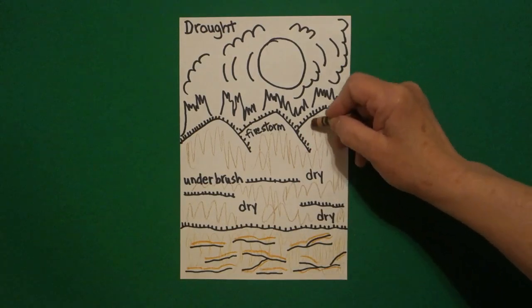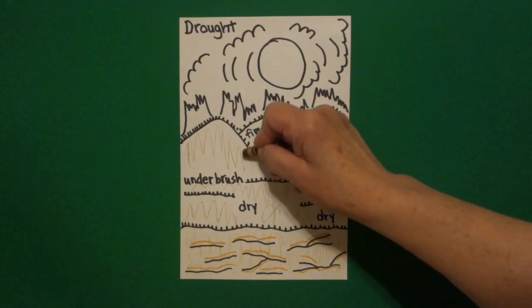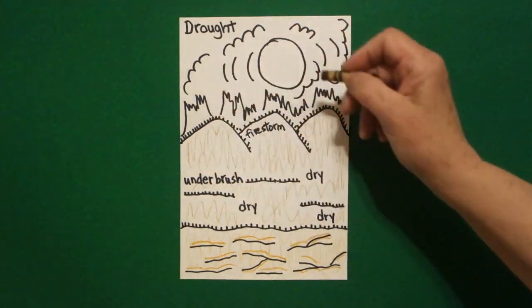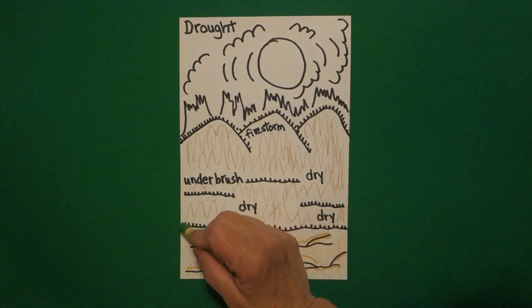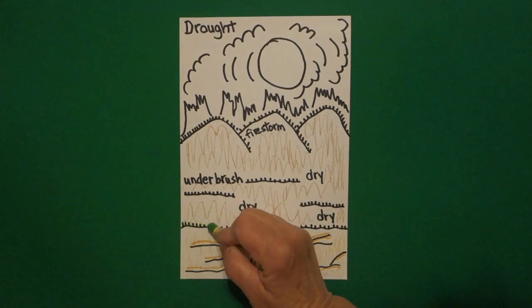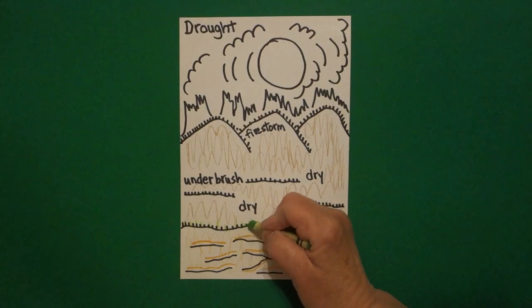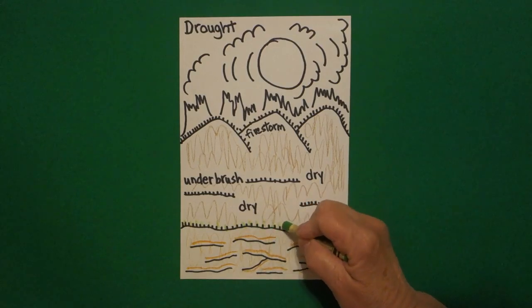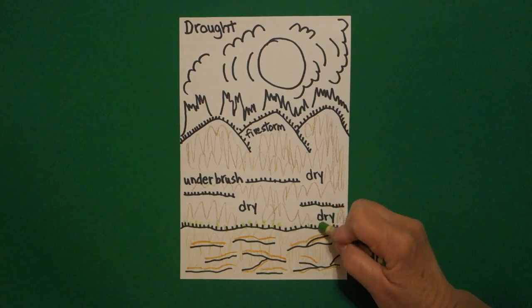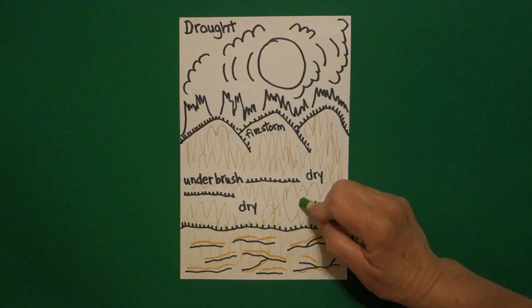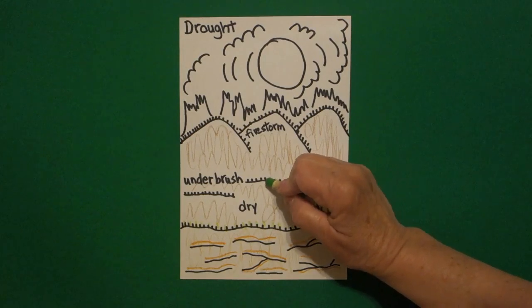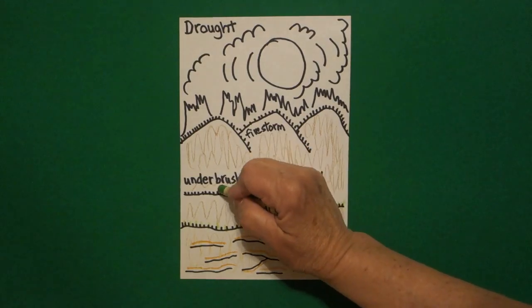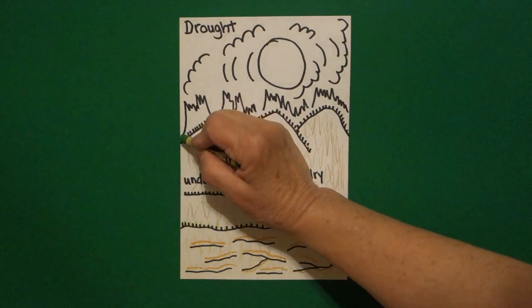Now, you don't want to color so dark that you can't see your letters, your words, so keep this so that you can still see what you wrote. So, then, I got my light green, and because I wanted it to look like there are plants, it's not totally dead, there are plants, I'd use my light green.